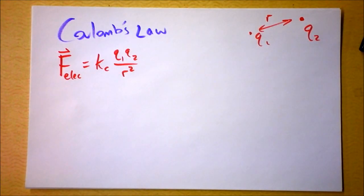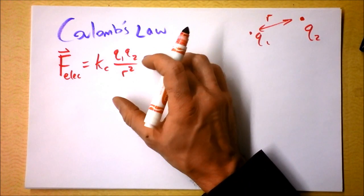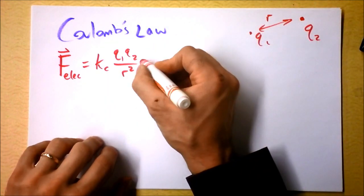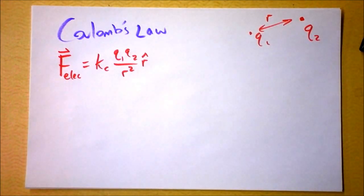Which way does it point? I guess if the two charges are the same, then it points in opposite directions, it points away from the other one, so that's gonna be in the r hat direction. Alright, fair enough.